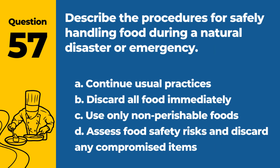Question 57. Describe the procedures for safely handling food during a natural disaster or emergency. A. Continue usual practices. B. Discard all food immediately. C. Use only non-perishable foods. D. Assess food safety risks and discard any compromised items. Answer: D. Assess food safety risks and discard any compromised items. During a natural disaster or emergency, it is important to assess food safety risks and discard any food items that may have been compromised.